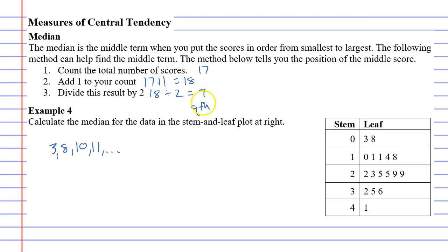And that means that the ninth score is the median or the middle score, which is really useful because with a stem and leaf plot, we can just count in nine steps: 1, 2, 3, 4, 5, 6, 7, 8, 9. This three, which is really 23, is the middle or the median.